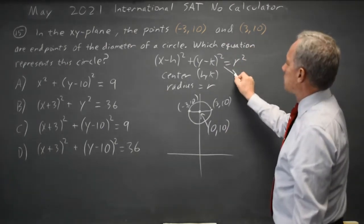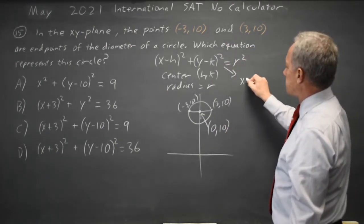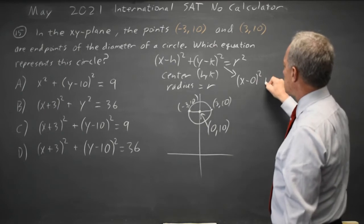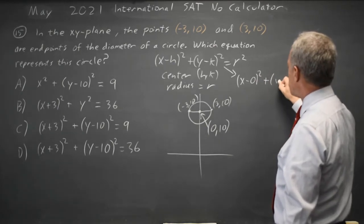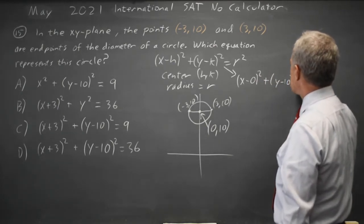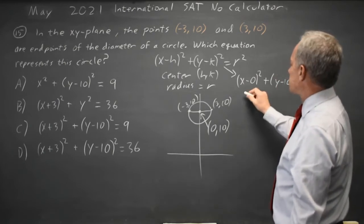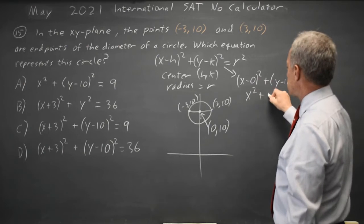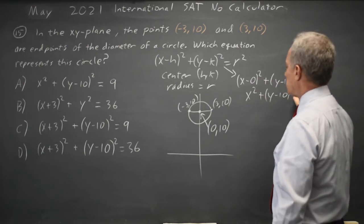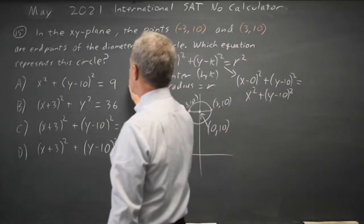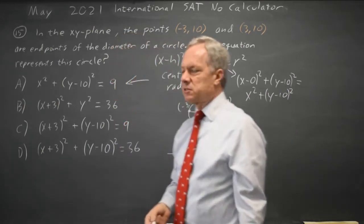My equation x minus h squared becomes x minus 0 quantity squared. y minus k squared becomes y minus 10 quantity squared. There's only one choice with x minus 0 squared, which is x squared. Choice A is the only possible correct answer.